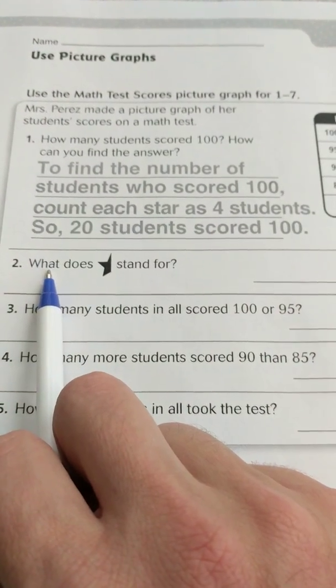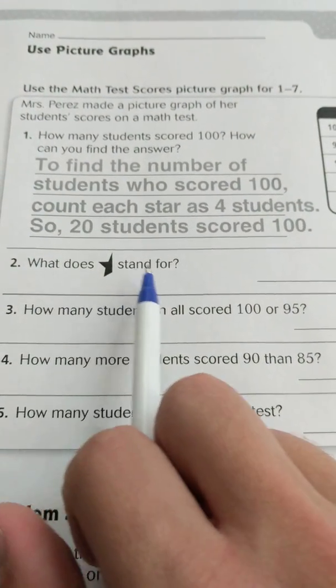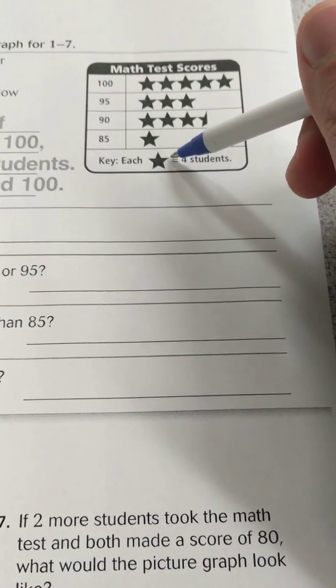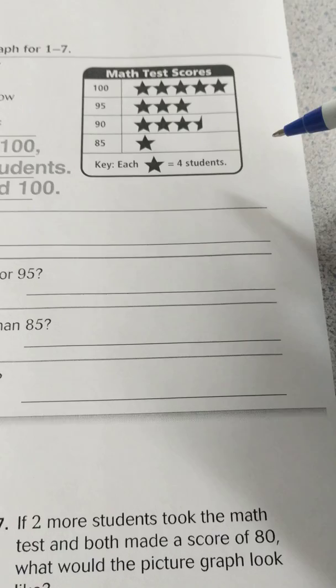Alright, so on to the next question here. What does half the star stand for? Well, you look at the key again, and it says each star stands for 4 students. So half of 4 students would be 2 students.